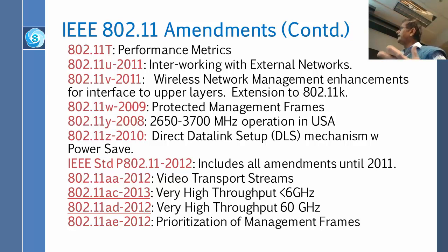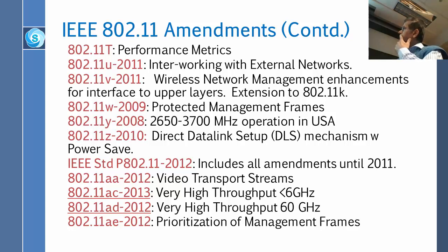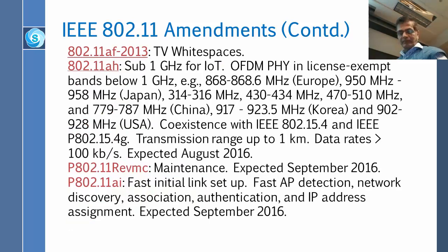Then we start with AA — video transport stream. AC is very high throughput at less than 6 gigahertz, and AD is at 60 gigahertz. We will have a detailed discussion of AC and AD. Prioritization of management frames is AE. AF is white spaces — we have a whole module on white spaces. AH is for IoT.